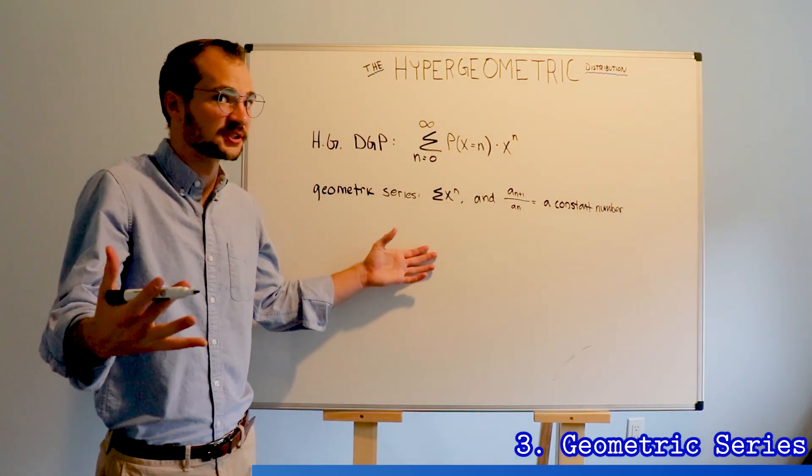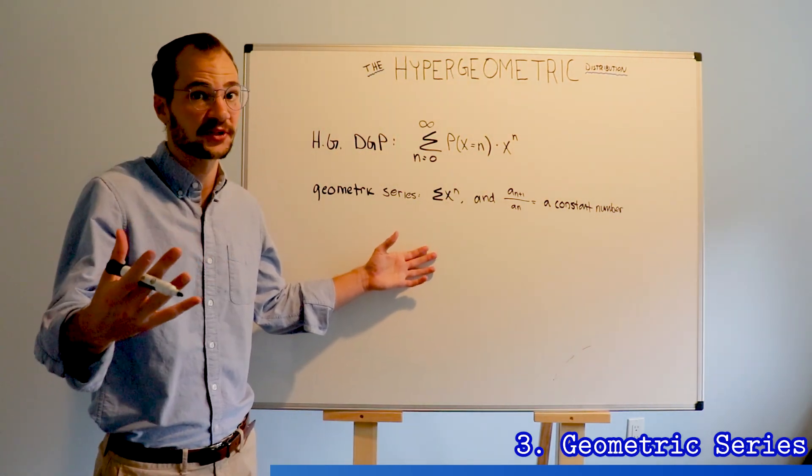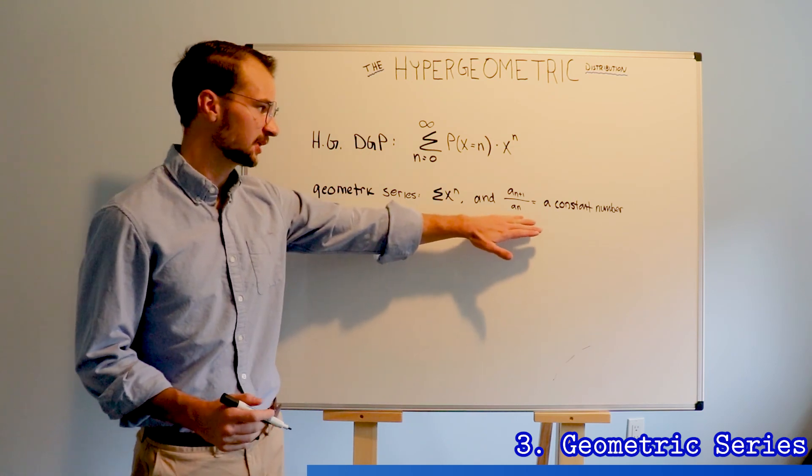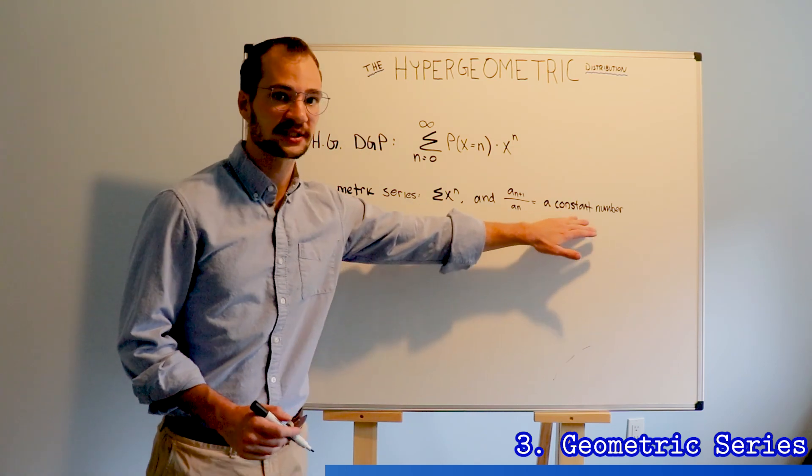And this is why the geometric series, even though it's very similar to the negative binomial, is called the geometric series because the ratio is a constant number.